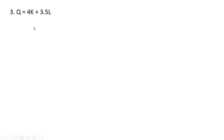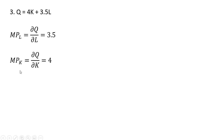Another production function with a slightly different functional form. The marginal product of labor is just 3.5 — always constant in this case. Every time we hire one more worker, output goes up by 3.5 units. Likewise, the marginal product of capital is also constant, but this time at 4. Every time we use one more unit of capital — holding labor fixed — output goes up by 4 units.